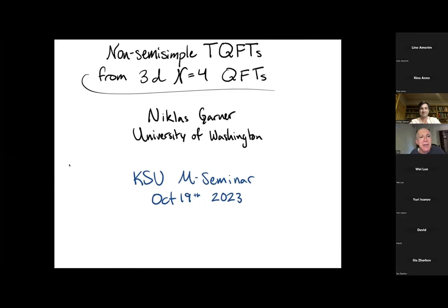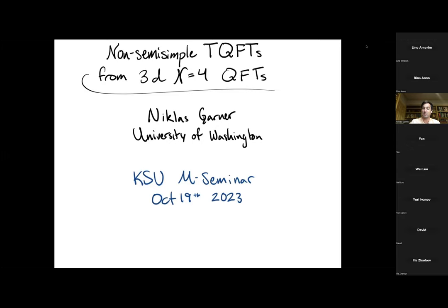We have the last of three lectures by Nicholas Garner from the University of Washington. The title, shown on the slide, is 'Non-Semi-Simple TQFTs from 3D N=4 QFTs.' Thank you all for joining me again for this third in a series of lectures. The first was more physical, yesterday's was sufficiently mathematical with some science fiction, and today I want to extend the discussion to a more general setting: not the free hypermultiplet but a theory generalizing Chern-Simons theory based on SU(n) at positive integer level k.